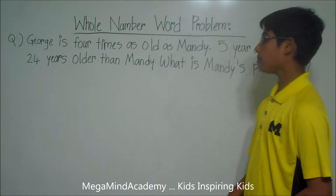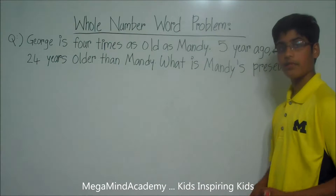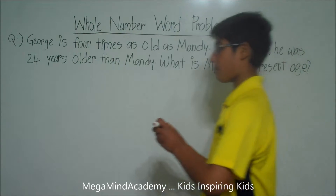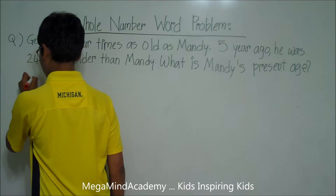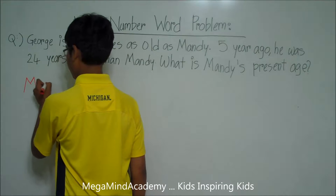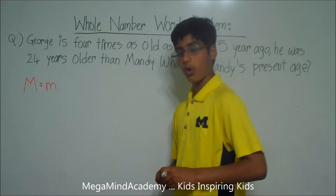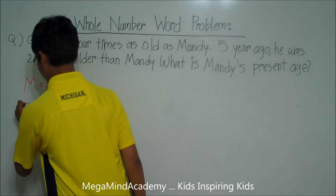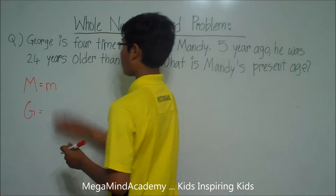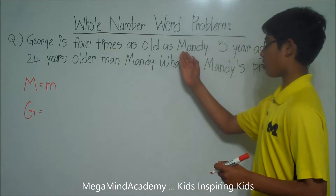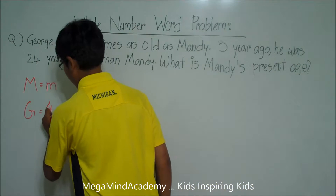The problem states that George is four times as old as Mandy. So this means that Mandy — M for Mandy — is M years old. This also means that George — G for George — is equal to four M. George is four times as old as Mandy, so George is equal to 4M.